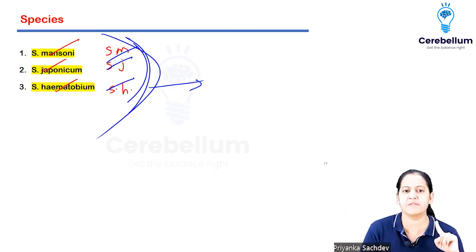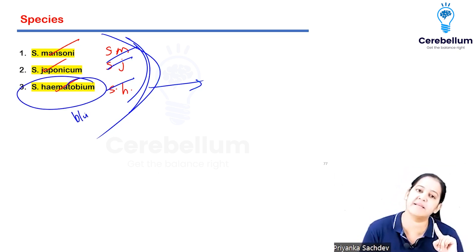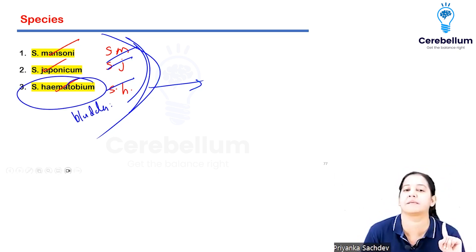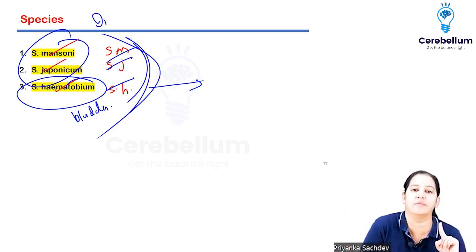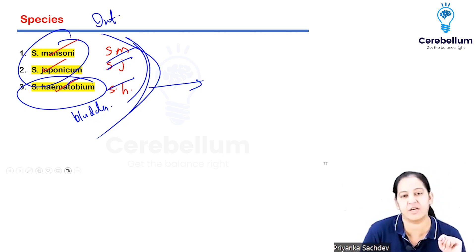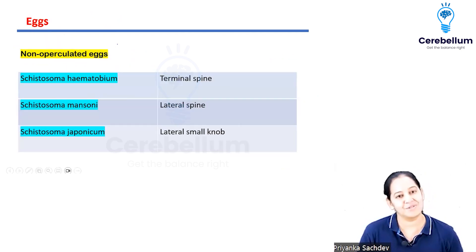There are three types of Schistosoma: haematobium remains in the human bladder, while mansoni and japonicum remain in the intestine of the human.